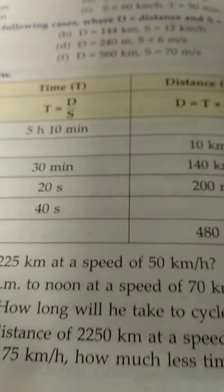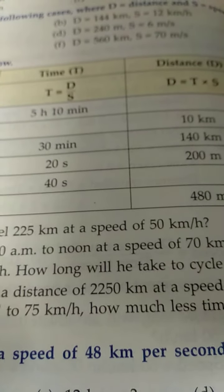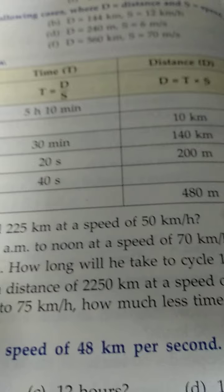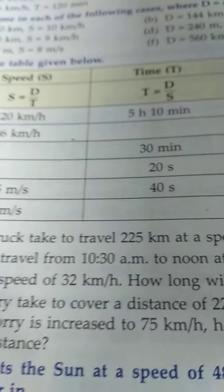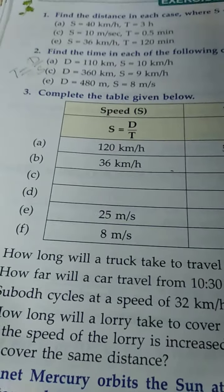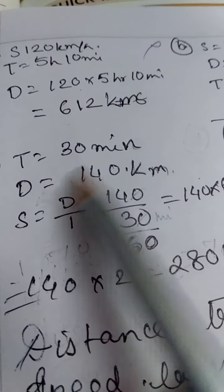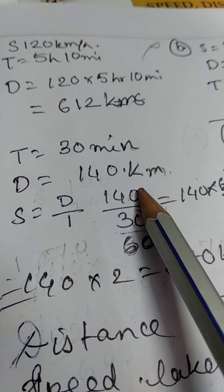Next, C, question number C. 30 minutes, 140 km. So we have to find the speed. The speed chart is empty. Time 30 minutes, distance is 140 km.